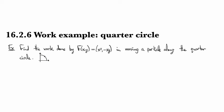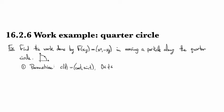Alright, so as usual, our first step is to write down a parametrization. So we will take the usual c of t to be cosine t, sine t.